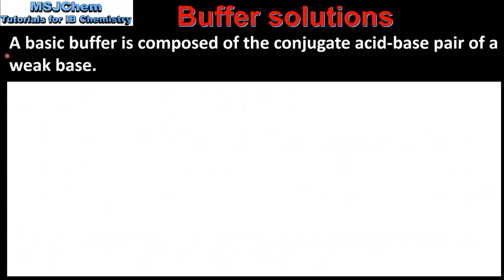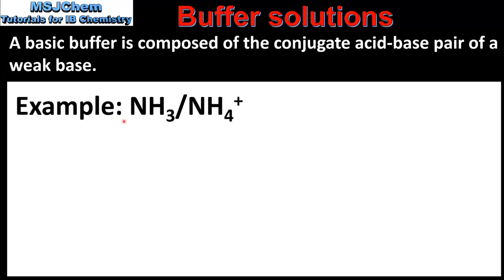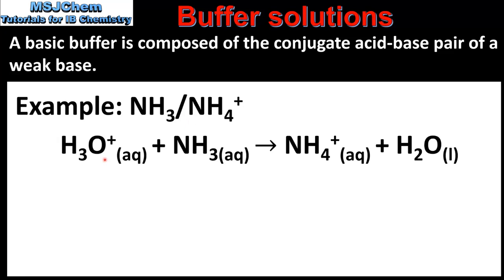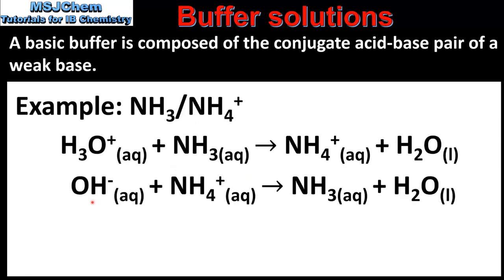Next we look at basic buffers. A basic buffer is composed of the conjugate acid-base pair of a weak base — for example, the weak base ammonia and its conjugate acid the ammonium ion. When hydronium ions are added to the buffer solution they react with the ammonia to form ammonium ions and water. When hydroxide ions are added, they react with the ammonium ions to produce ammonia and water. By reacting with the added hydronium or hydroxide ions, the pH of the solution is maintained.